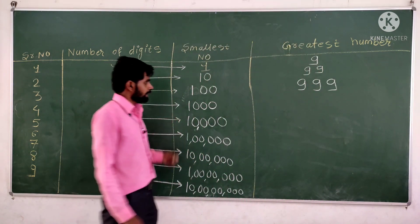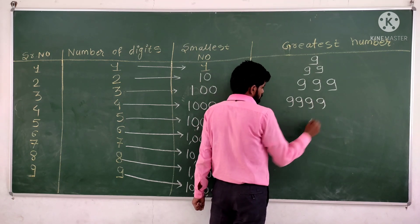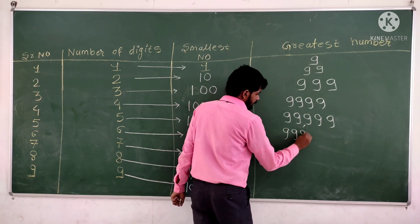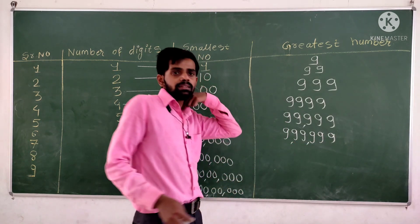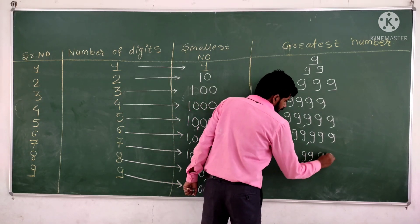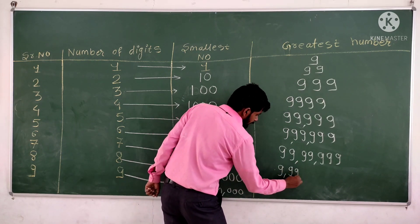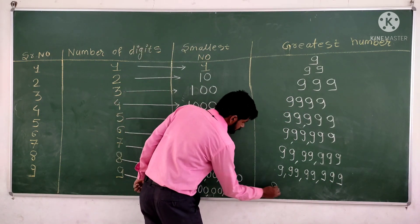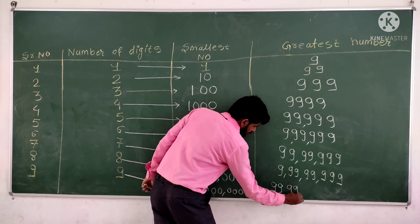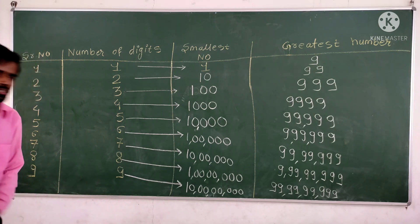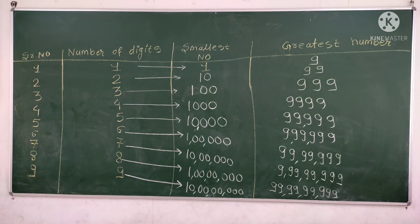Now let's move towards the greatest numbers. The greatest five digit number has five nines — 99,999. The greatest six digit number is 9,99,999. Then the greatest seven digit number is 99,99,999, and so on. Please write this table in your maths notebook along with the previous topic.